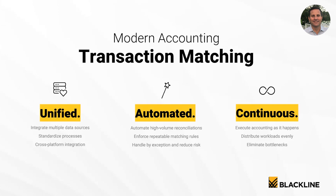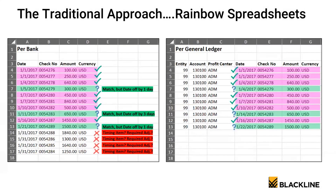The next module is the transaction matching module — matching records from one data source to another. The most common example is a bank reconciliation. Today most companies do this in Excel: they dump GL and bank data into a file, put them side by side, and match records one by one. Some manually click each transaction in their ERP to mark it as clear. Either way, it's a very manual and time-consuming process.